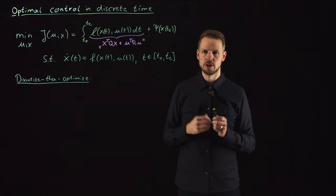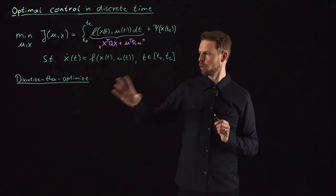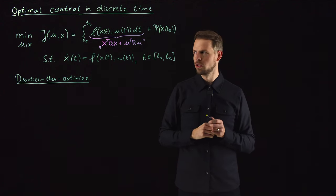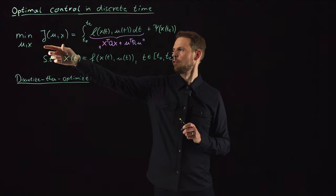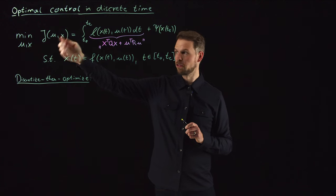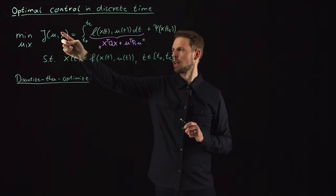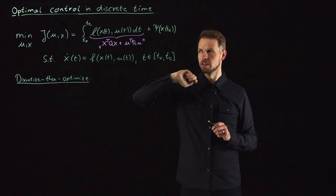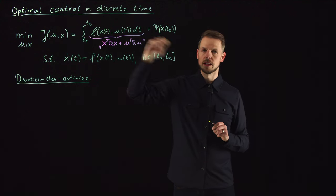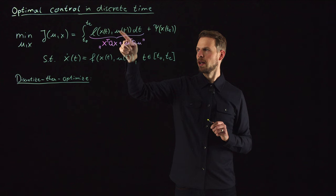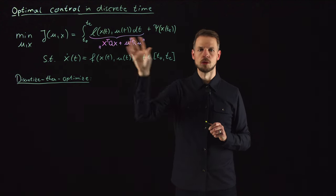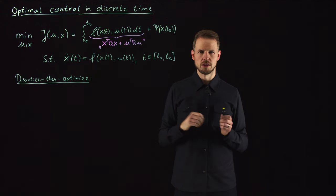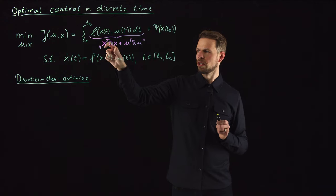Before we dive in, we reconsider what we ended up with in the last video, which was the task to minimize an objective functional J that is a function of the state function X and the control function U. We have an integral over our time horizon of interest and we have this tracking type function L which depends on state and input. This is something you see very frequently, this quadratic form in terms of the state and another quadratic form in terms of the control.